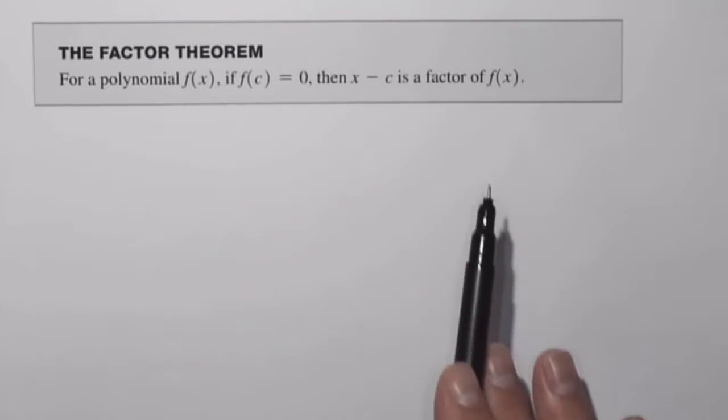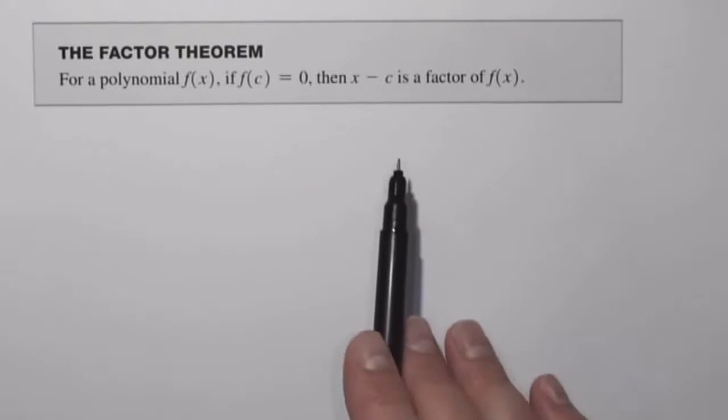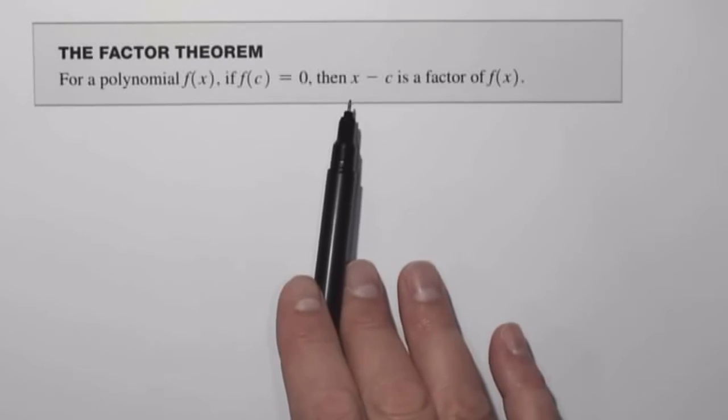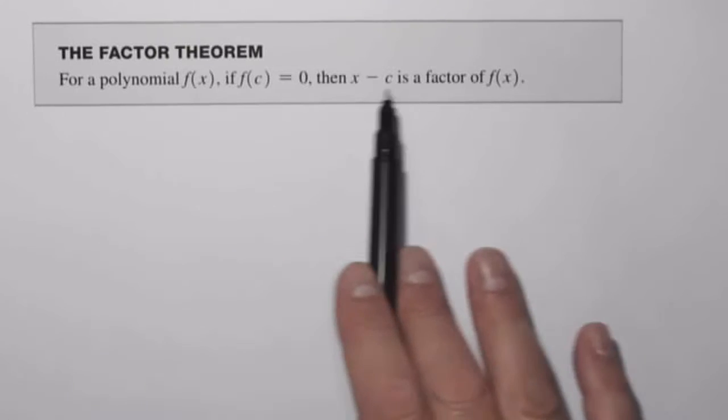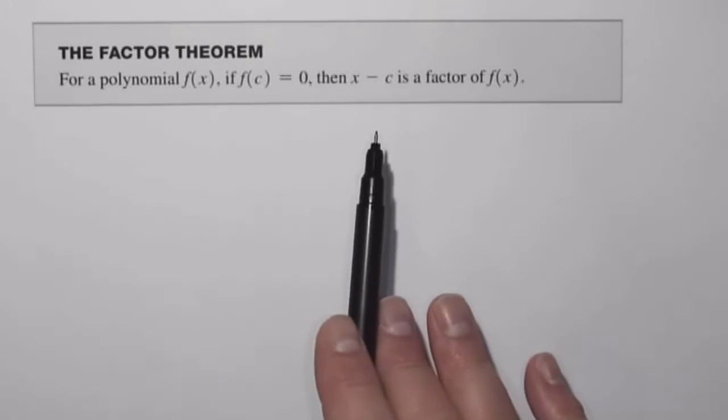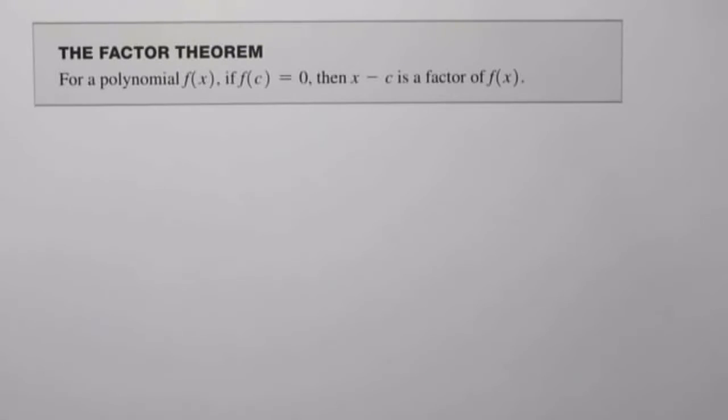So what we've been examining in this section is the relationship between the zeros of a function, the x-intercepts of a function, and the factors of the function. This is kind of summarizing a lot of what we have been exploring. So let's look at an example.